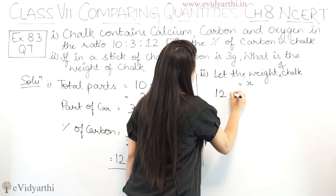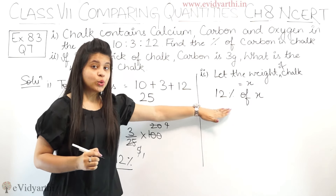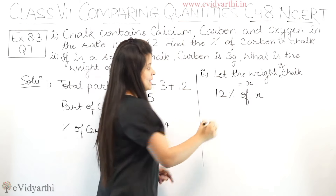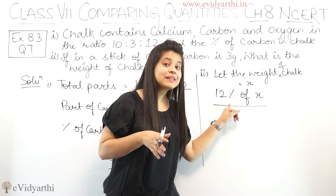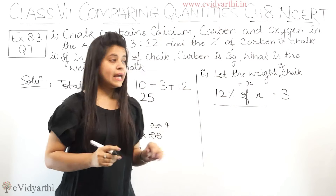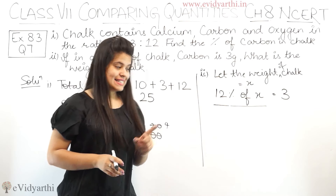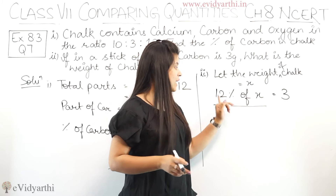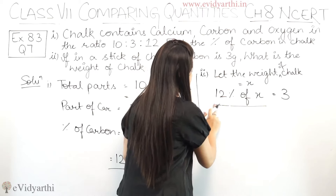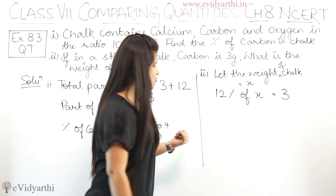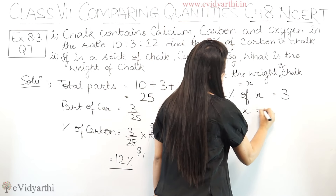We can write that 12% of x equals carbon. यह जो 12% of x है, यह indicate करता है कि chalk का 12% carbon है. Carbon की value हमें given है, जो 3 gram है. So the equation becomes: 12% of x = 3, meaning (12/100) × x = 3.